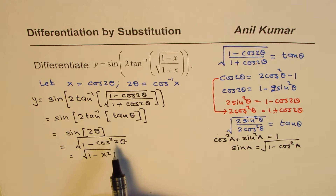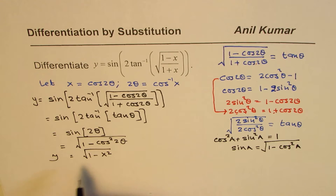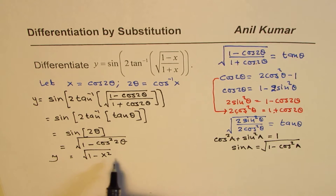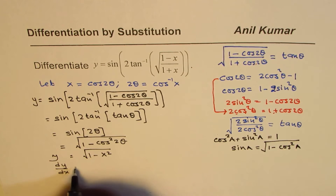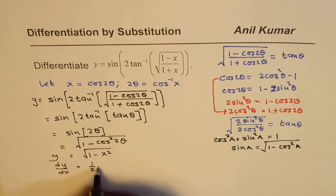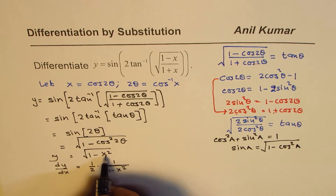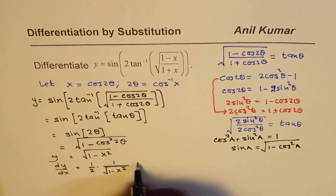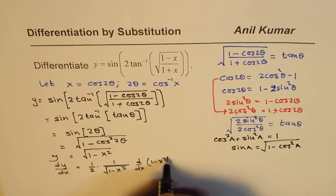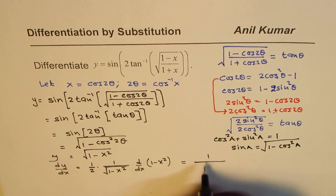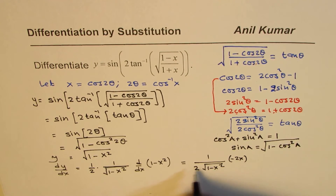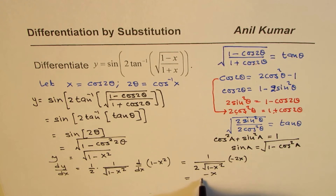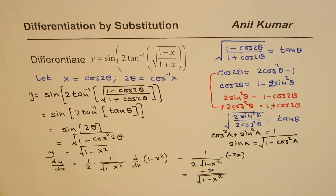Combining all these strategies, y equals square root of 1 minus x squared. Now we can take derivatives: dy/dx is the derivative of this function, which is 1 half times this to the power of minus half — that is 1 over square root of 1 minus x squared — times the derivative of 1 minus x squared, which is minus 2x. The 2s cancel, so we have minus x over square root of 1 minus x squared.